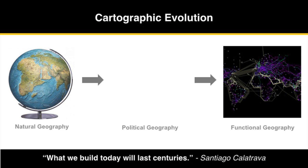This represents a true evolution in cartography. We are all familiar with maps of natural geography and of political geography, but we are moving into an age in which what matters more than both of those is functional geography — or perhaps they're equally important. But to appreciate the complexity of the world today, we have to take all three into account.